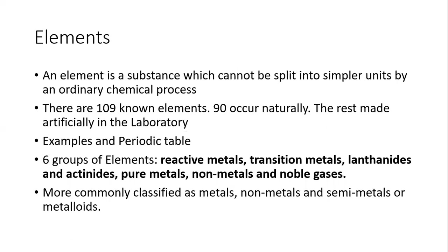What is an element? An element is a substance which cannot be split into simpler units by an ordinary chemical process. The reason we say 'ordinary' is that in some very high-energy processes like nuclear fission, elements can actually be split — for example, uranium can be split into smaller elements. There are 109 known elements; 90 occur naturally and the rest are made in the lab. The periodic table contains elements. There are six groups: reactive metals, transition metals, lanthanides, actinides, pure metals, non-metals, and noble gases — such as argon, krypton, and helium.